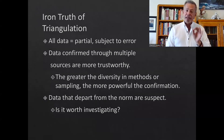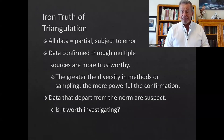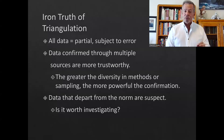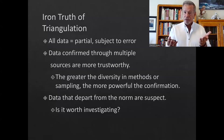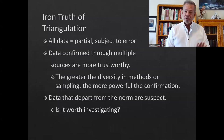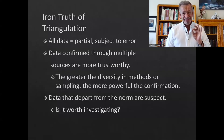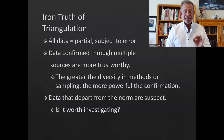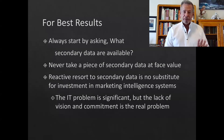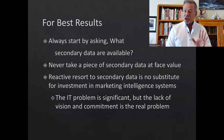The iron truth is: all data is partial and subject to error — that's just part of it. You're going to get excited about some data and find out it's junk. The best approach is to find a compelling report and then confirm it with another. You want multiple sources, and make certain those sources are trustworthy. The greater the diversity in methods and sampling, the more powerful the confirmation. If something seems wrong, cross-check it with something else. It may simply not be worth investigating.